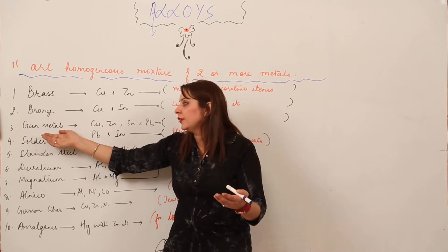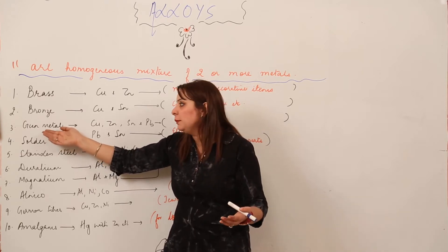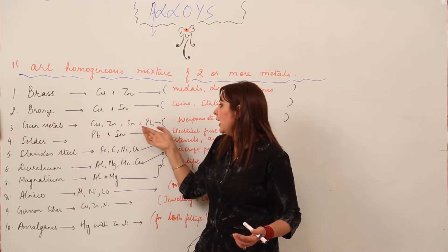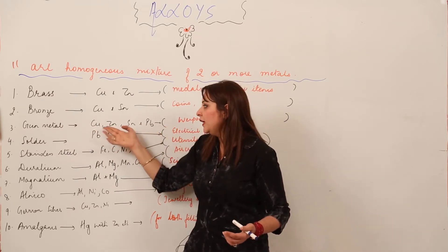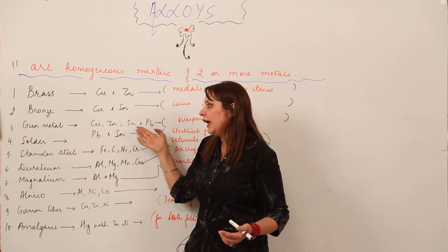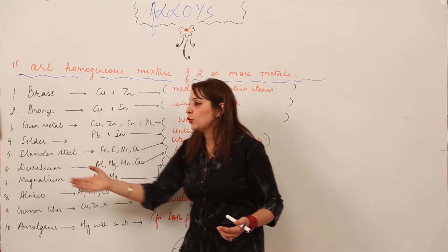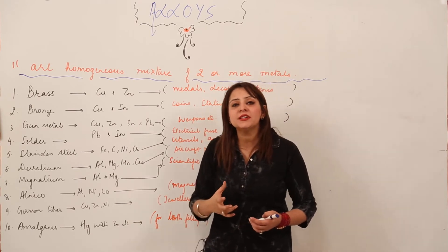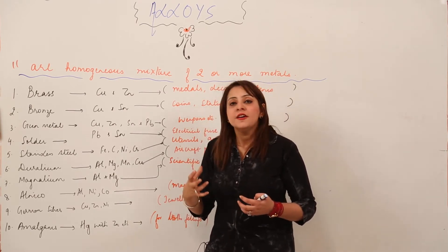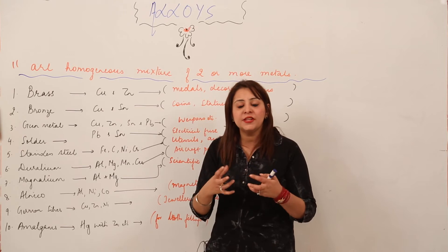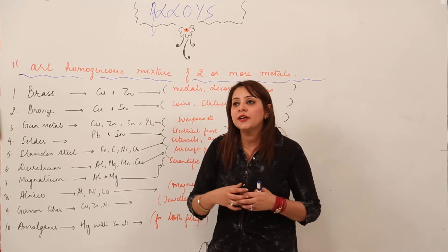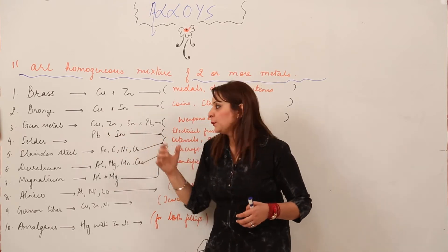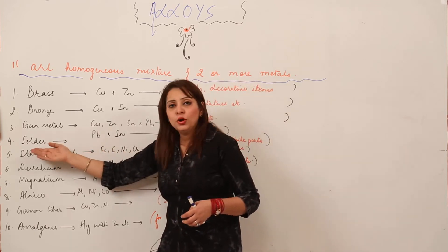The third alloy is gun metal. Gun metal is made up of copper, zinc, tin, and lead. It is used for making weapons — specifically the cartridge cases or bearings used in weapons are made out of gun metal.